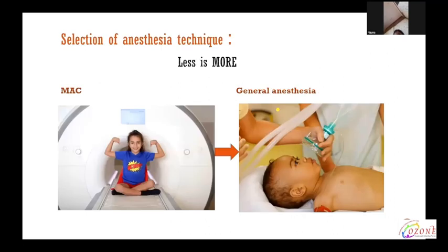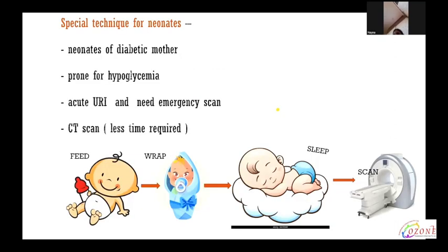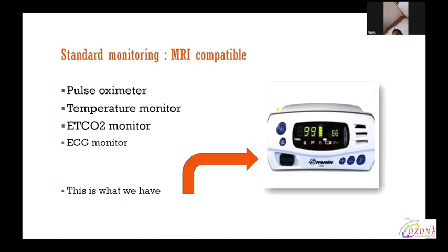Selection of anesthesia technique — the rule is less is more. It ranges from MAC to general anesthesia. Some kids are very cooperative — if you tell them the machine will just make noise and they will get a treat after the scan, that is often enough for a cooperative child. Special technique for neonates is feed, wrap, sleep, and scan. This is helpful in neonates of diabetic mothers who are prone to hypoglycemia, in acute URI with emergency need of scan, and for CT scan where the time required is short.